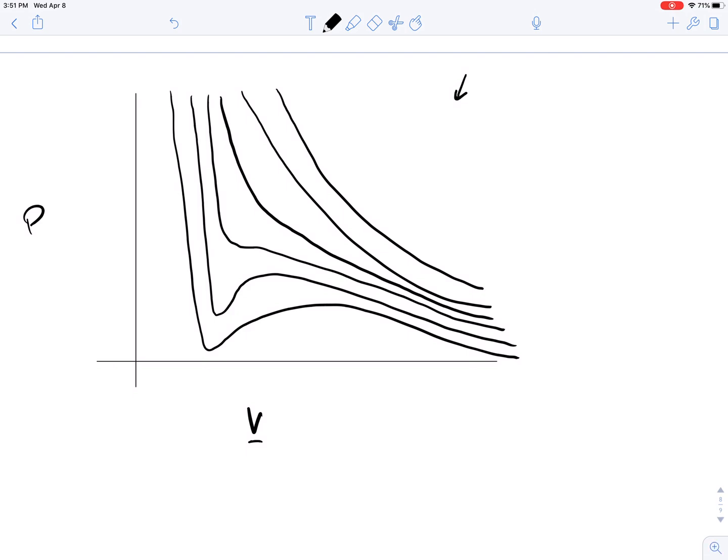So up here we have ideal gas-like behavior. That is, as the molar volume increases, the pressure decreases, and that's something you'd expect. If you increase the pressure, the volume would decrease, heading in this direction, increasing the pressure.